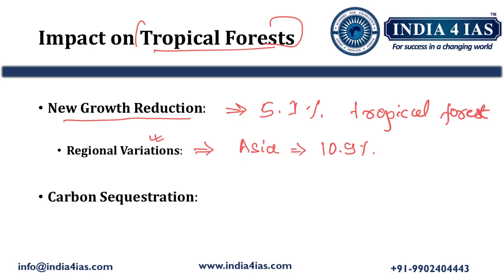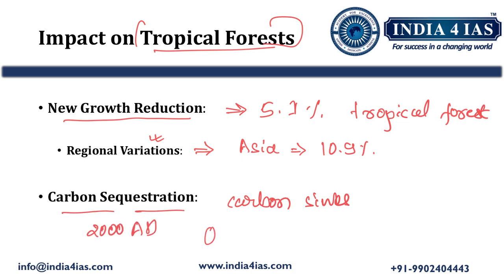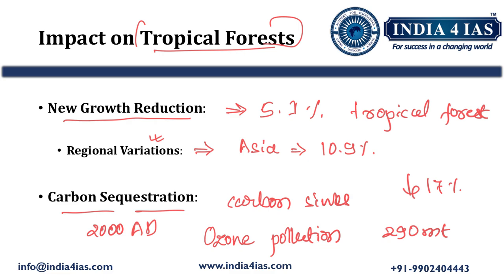As we know, tropical forests act as a carbon sink — they absorb carbon that is in the atmosphere and help reduce the global warming effect of CO2 by capturing and storing carbon dioxide. But since the year 2000, ozone pollution at the ground level has reduced the capture of 290 million tonnes of CO2 per year. This has led to a cumulative loss of 17% of carbon removal by tropical forests.